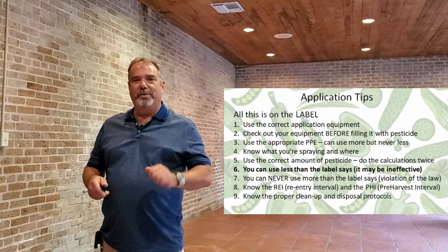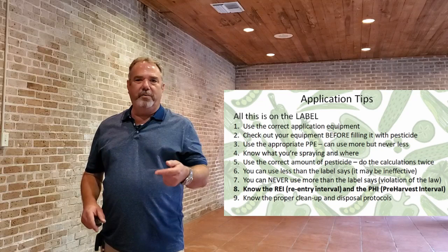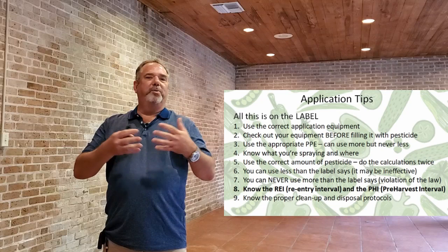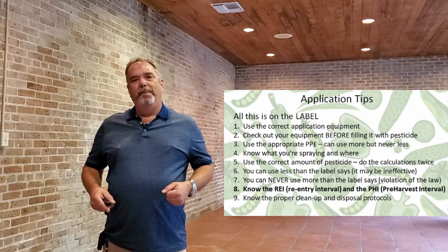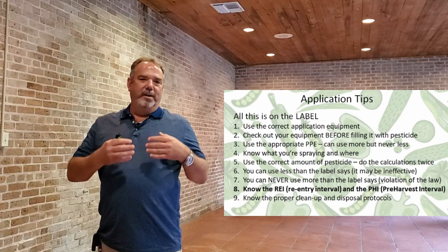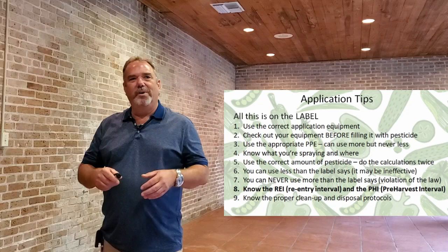Also know the re-entry interval — REI as it may say on the label — and the pre-harvest interval. After you apply a product, the re-entry interval tells you when it's safe to re-enter the area — sometimes it's just "wait till it dries," other times it could be one, two, or three or more days. The pre-harvest interval tells you how long after applying this product it will be safe to harvest and eat. Sometimes it's zero — if it's a horticultural spray oil, there is no pre-harvest interval — but some things you have to wait a few days.